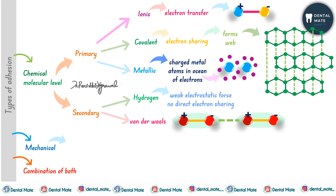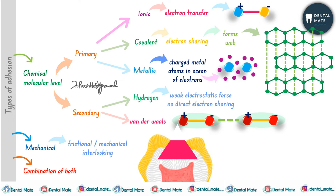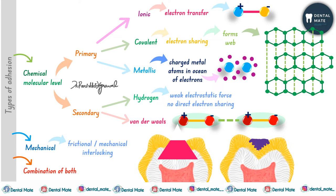The second type is mechanical retention or mechanical adhesion, formed either by friction or mechanical interlock. In dentistry, examples of mechanical adhesion include amalgam and composite, whereas for chemical or molecular-level adhesion the example is glass ionomer cement. Mechanical interlocking can be achieved by modifying the cavity design or by forming micro-tags in enamel or dentine.